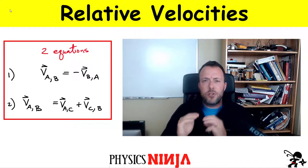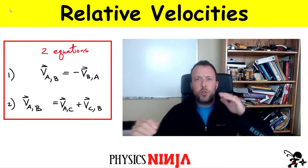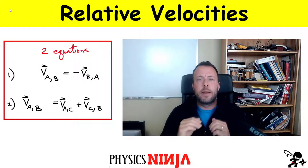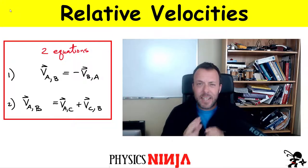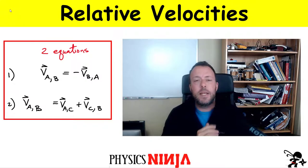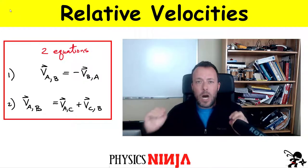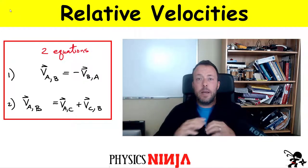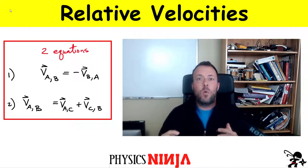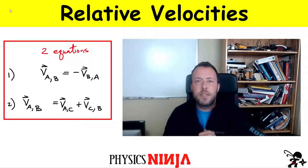We might be interested in calculating the velocity of one object relative to another object. It comes down to using two equations, which I'm going to show you how to use. We're going to consider examples of objects moving on a moving walkway and how to apply these equations to calculate those relative velocities.